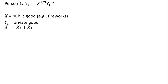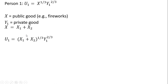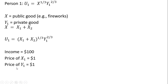Here we have person 1's utility function. Utility is a function of x, the public good, and y subscript 1, the private good. The amount of consumption for the public good is going to be the amount of fireworks that person 1 and person 2 shoots off. We can make a substitution for x as x subscript 1 plus x subscript 2. Person 1 has $100, the price of fireworks is $1, and the price of the private good is also $1.